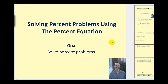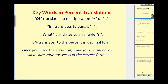Welcome to a lesson on solving percent problems using the percent equation. There is another video that solves the same types of problems using the percent proportion. The important part in setting up and solving an equation is to identify the key words: 'of' translates to multiplication, 'is' translates to equals, and 'what' or 'what number' translates to a variable — I used n here. If we're given the percent, we need to translate it to its decimal form. Once we have the equation, we solve for the unknown and make sure the answer is in the correct form.